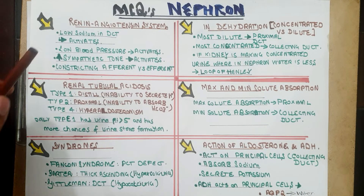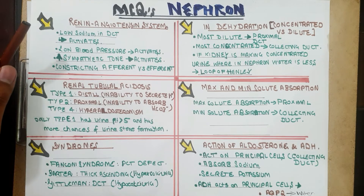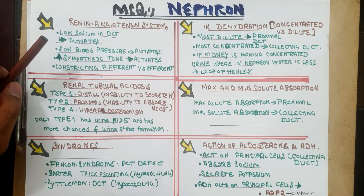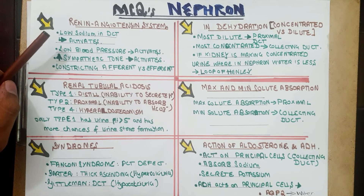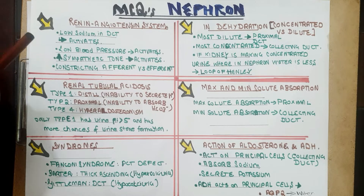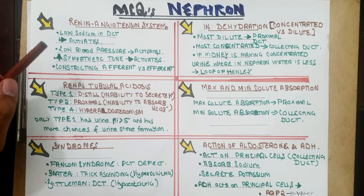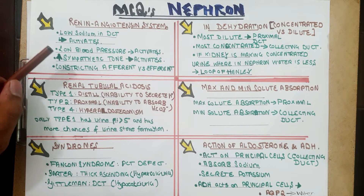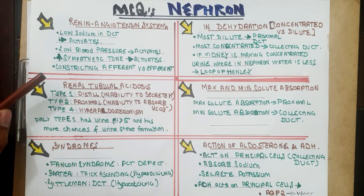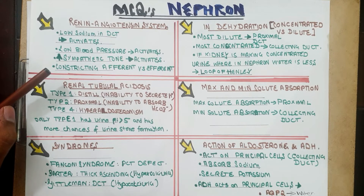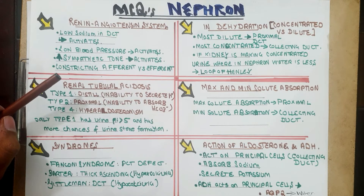The activators of the renin-angiotensin system are: first, low sodium in the DCT detected by the macula densa, which activates renin release; second, low blood pressure, which activates the renin-angiotensin system; and third, increased sympathetic tone, which also activates this system. A common exam MCQ that confuses students is: what will be the effect on GFR by constricting the afferent or efferent arterioles?